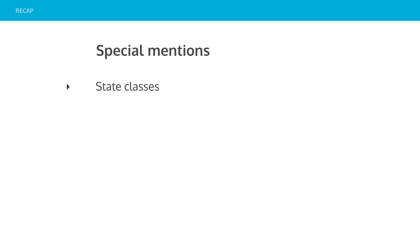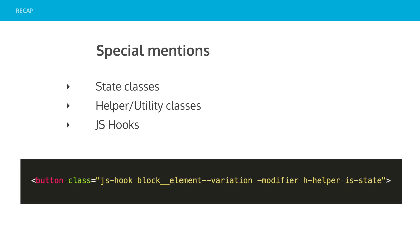Special mentions: don't want to forget state classes, helper and utility classes, and JS hooks. They're all other classes that can live in your code base. State and utility are also a form of modifier — due to their high priority nature we should put them at the end so they can override everything. Most of the time you should use important on these things so they take precedence no matter where they are in the code. JS hooks are just a way to hook into JavaScript so they don't have any style. In a worst-case scenario you could find in your code base: JS hook, block, element, modifier, variation, modifier, page helper, state — and the system we've created lets you take back control and be confident about what's going to happen to your styles.